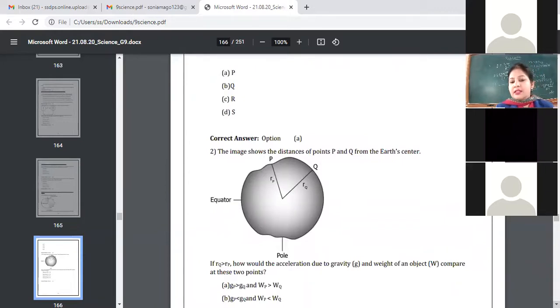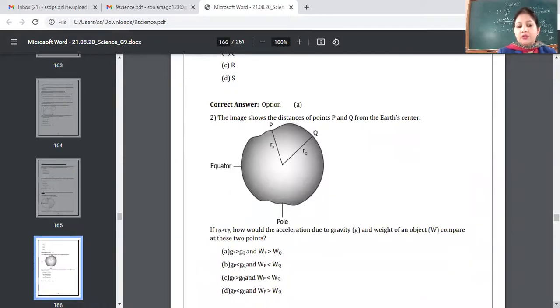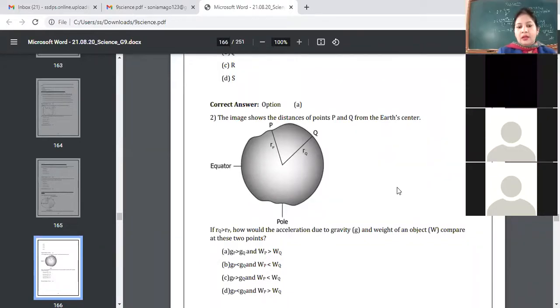The image shows distances of points P and Q from Earth center. Okay, if R Q is greater than R P, how would the acceleration due to gravity and weight of object compared at these two points? So here we know how much will the acceleration due to gravity and weight? Means whether GP will be greater than GQ or weight will be greater there or not? Think about it and tell me the answer.